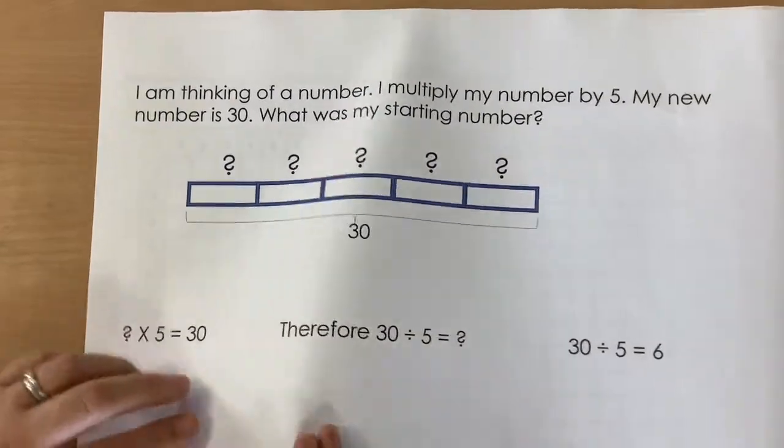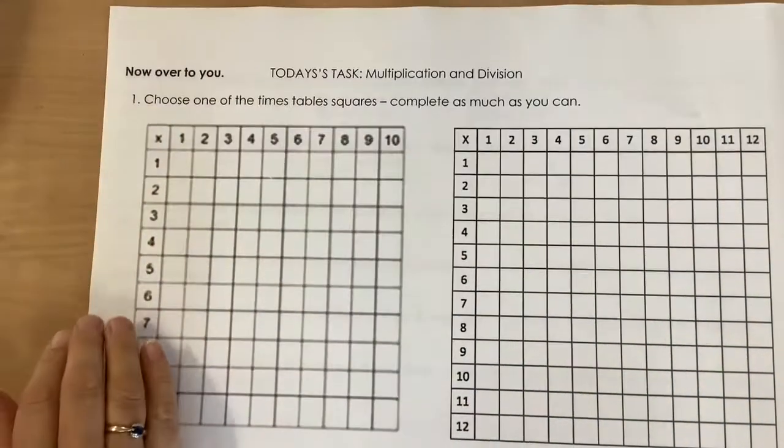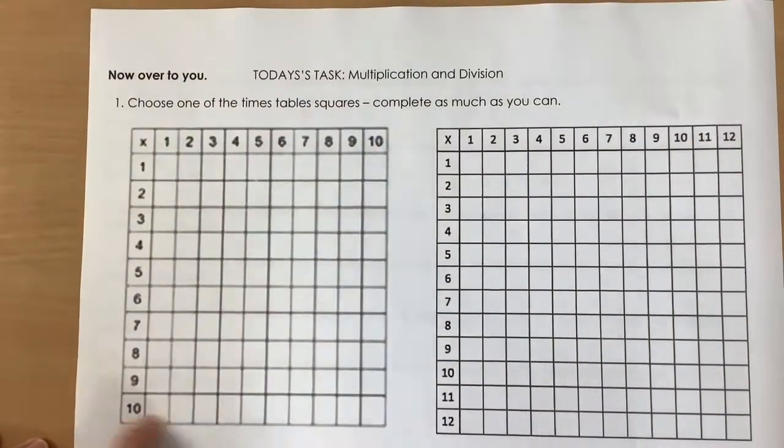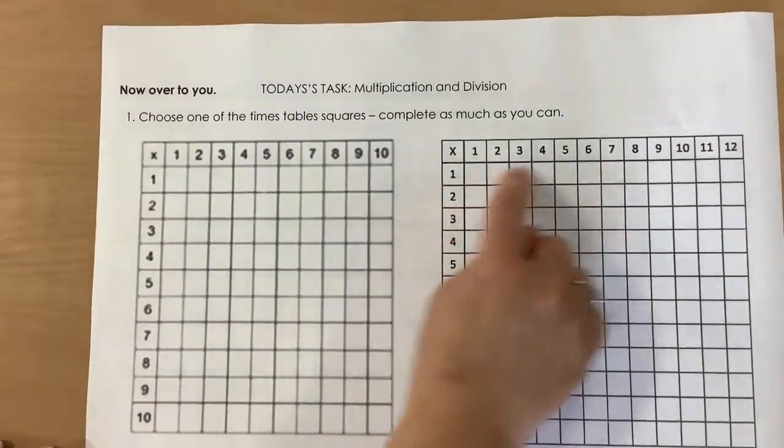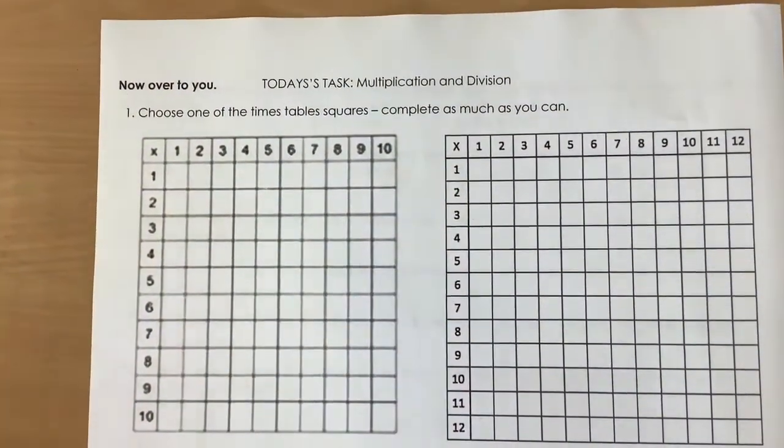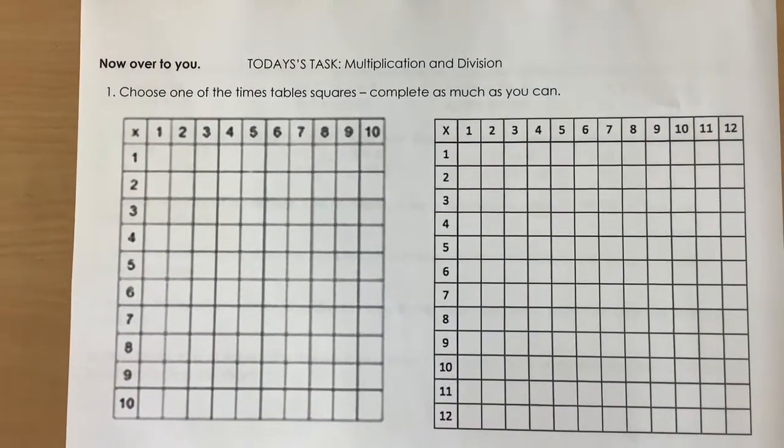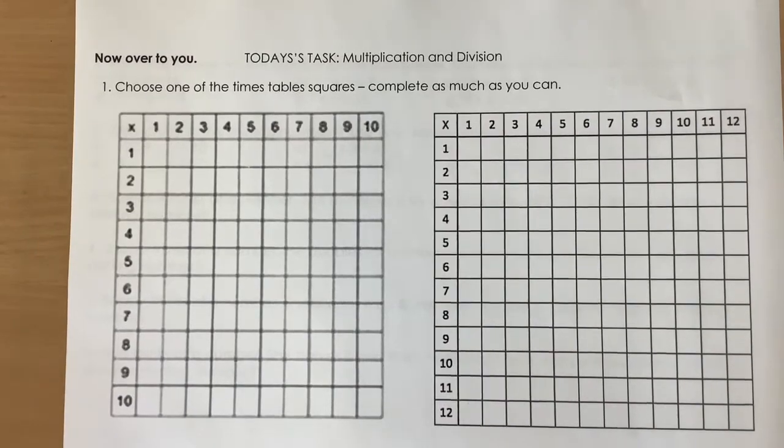So for today's task, I have given you a couple of times table squares. I've done one that goes up to 10 times 10 and I've also gone up to 12 times 12. Now I know that we haven't completed all of these times tables and times tables rock stars as yet, but just complete as much as you can.